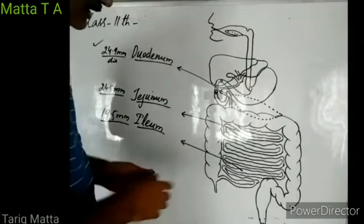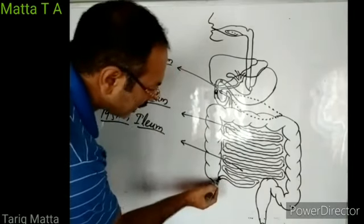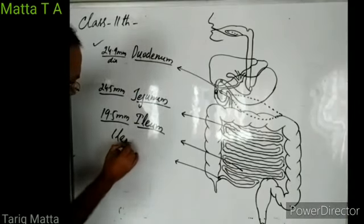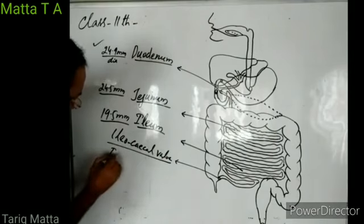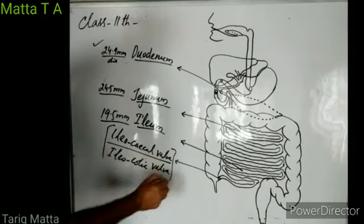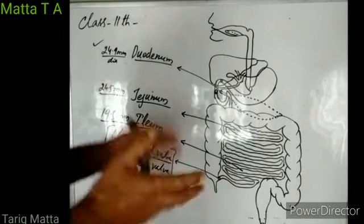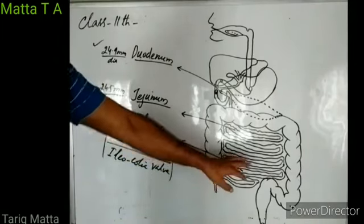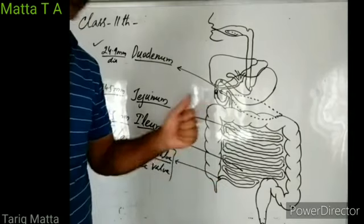The ileum joins with the large intestine, and the junction of ileum and large intestine is guarded by a valve known as the ileocecal valve, or sometimes called the ileocolic valve. This valve doesn't allow undigested food materials to enter back from the colon into the small intestine, guarding the one-way movement of food from small intestine into large intestine.